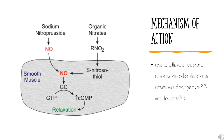Mechanism of Action: Isosorbide dinitrate is converted to the active nitric oxide to activate guanylate cyclase. This activation increases levels of cyclic guanosine 3,5-monophosphate (cGMP). cGMP activates protein kinases and causes a series of phosphorylation reactions, which leads to dephosphorylation of myosin light chains of smooth muscle fibers. Finally, there is a release of calcium ions, which causes smooth muscle relaxation and vasodilation.